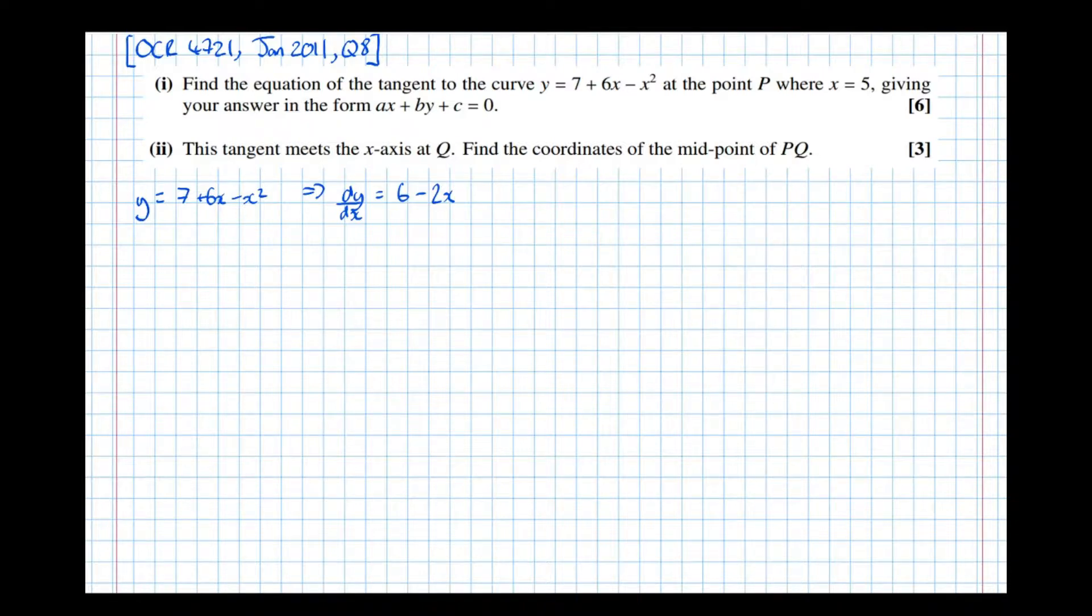So it asks us to find it at the point where x equals 5. At x equals 5, we only know the x coordinate, so we're going to need to find the y coordinate. So we substitute it back into the equation, the coordinate equation as I call it: 7 plus 6 lots of 5, take 5 squared.